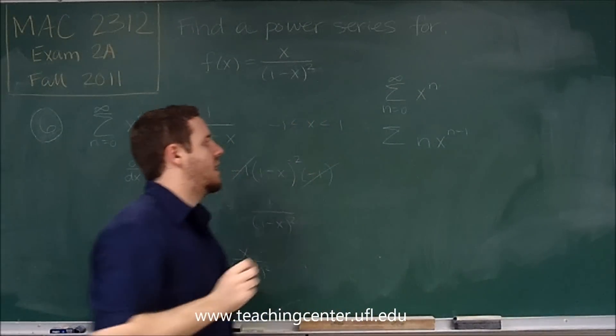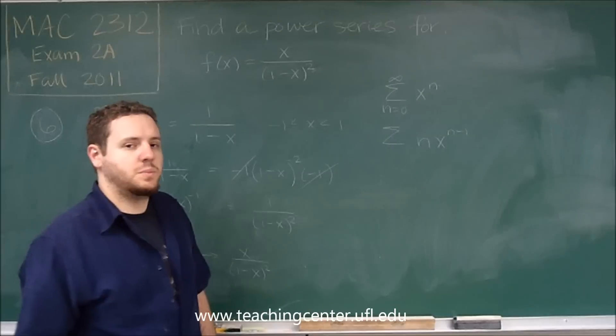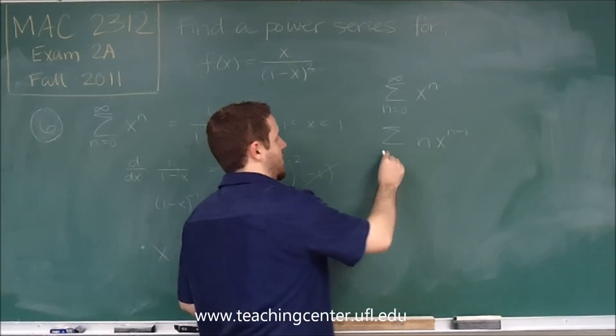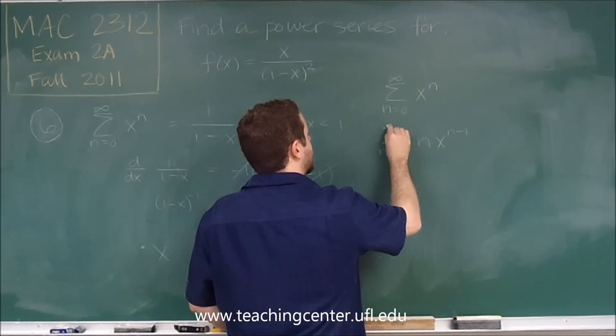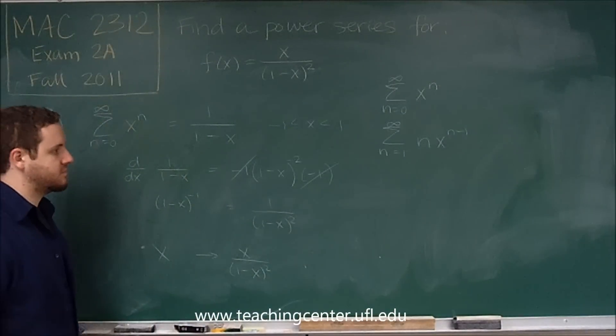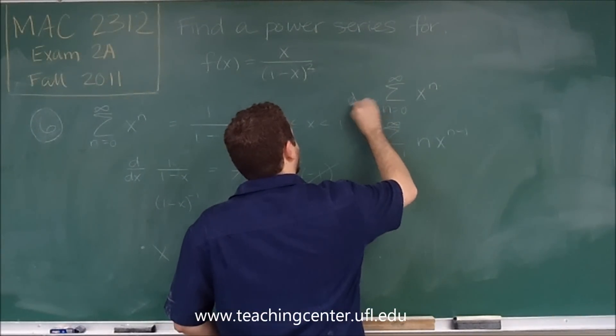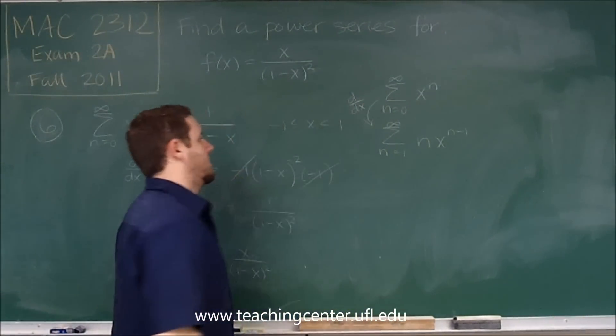You can see here now that the possibility of n equaling 0 is kind of superfluous because it's just going to be 0 anyway. So we can write n equals 1 to infinity now. So doing this step here was doing the derivative.